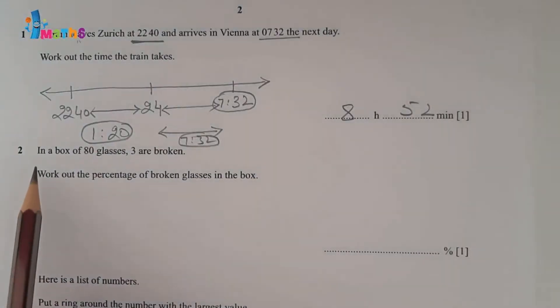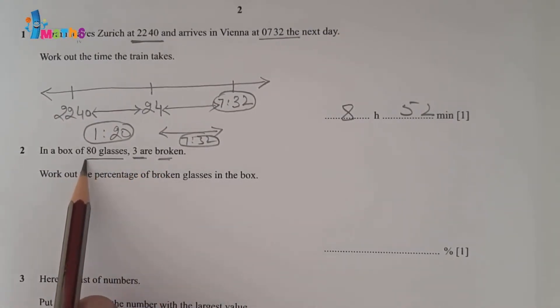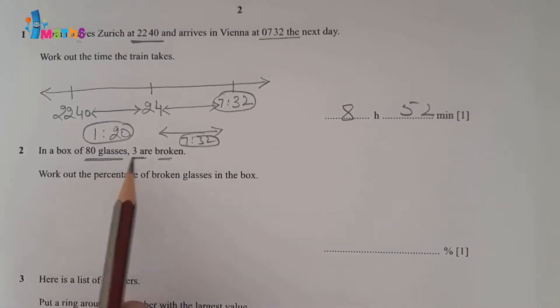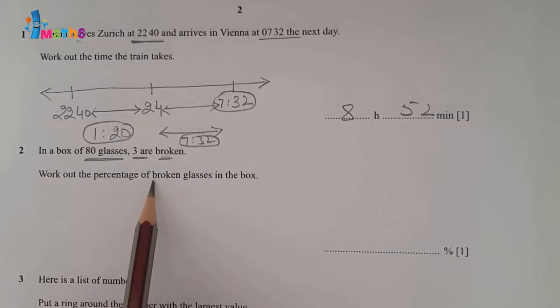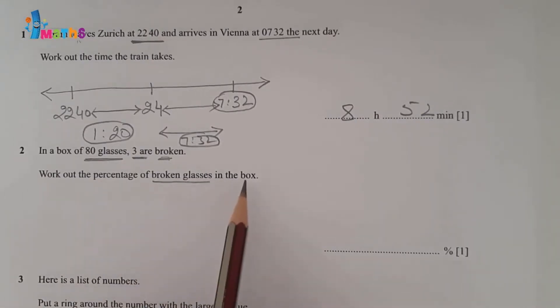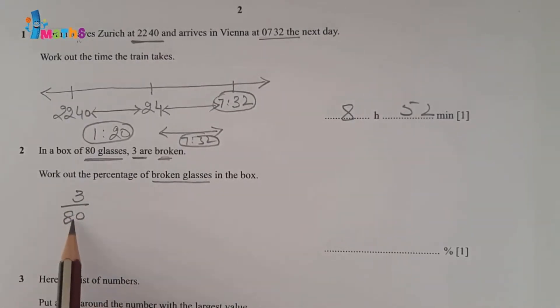Question number 2: In a box of 80 glasses, 3 are broken. Total number of glasses is 80, and broken are 3. Work out the percentage of broken glasses in the box. So 3 out of 80 are broken.